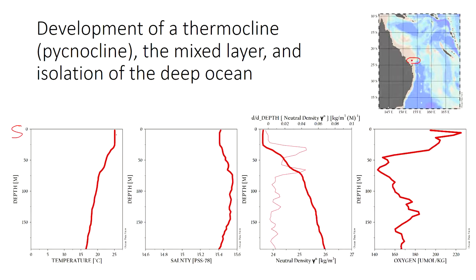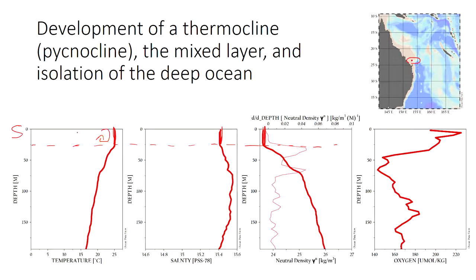These two properties - temperature and salinity - combine to give us this neutral density. The first thing to point out is that in the surface ocean, above a certain depth, the parameters are quite constant: temperature is at a constant value, salinity is at a constant value, and because temperature and salinity are constant so is density. The reason for that is that the surface ocean is in contact with the atmosphere; the winds cause waves which mix up this surface layer and homogenize all the physical properties.